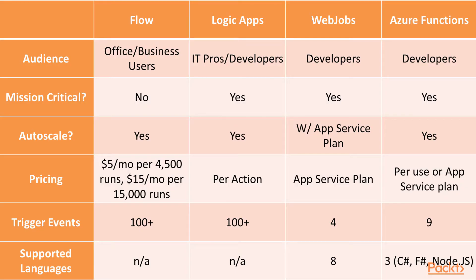It's helpful to see them all side by side. With Flow, you target office and business users, whereas Logic Apps, Web Jobs, and Azure Functions are more developer-focused or IT pro. If you need mission-critical functionality, you don't want to run on Flow — but Logic Apps, Web Jobs, and Azure Functions will be suitable. For auto-scaling, Flow and Logic Apps auto-scale to an extent, and Web Jobs does with an App Service plan, but Azure Functions really makes this easy and can handle a lot of scaling. As for pricing, they're all priced differently. With Flow, you pay $5 a month to get a 4,500-run plan. With Logic Apps, you pay per action — an action being a task that happens as part of a run — and you could have three billable actions in one run.